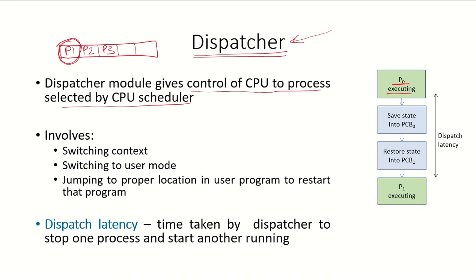Suppose P0 was executing and the scheduler has decided that P1 will execute next. The job of the dispatcher is to save the state of the running process P0 into its process control block, restore the state of the new incoming process, and then hand over the CPU to that new process. This context switching is done by the dispatcher.